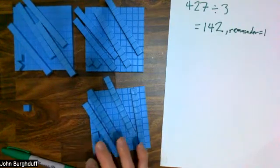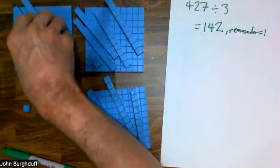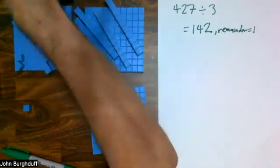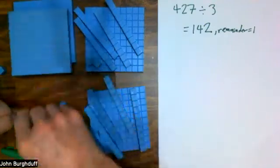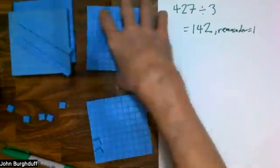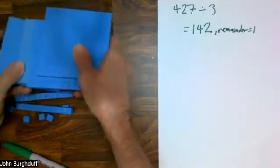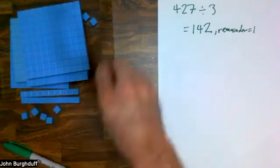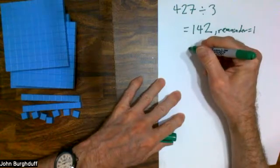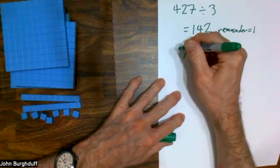Now what I'd like to do is reset this the way it originally was and show you that the process I've gone through to divide into three piles is actually the standard long division algorithm — just in physical objects. So I'm going to bring my flat back, back to 427: four flats and two longs. Let me begin long division the way we're used to seeing it. The dividend is written under a division symbol and the divisor is written to the left.